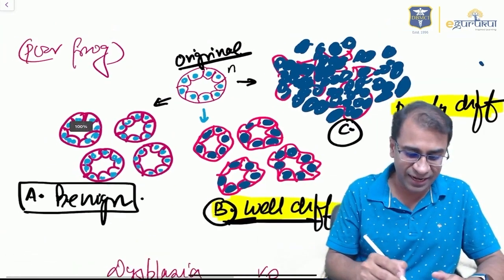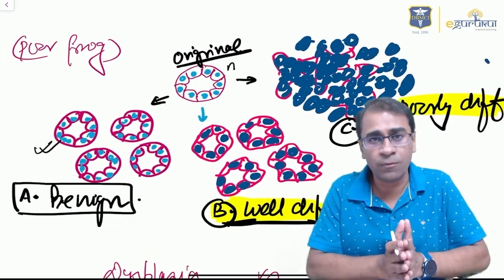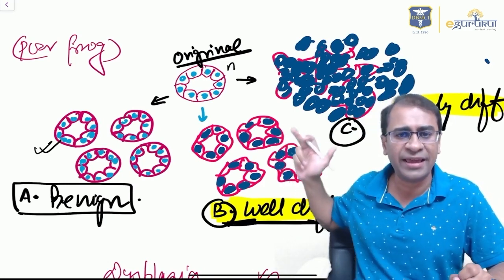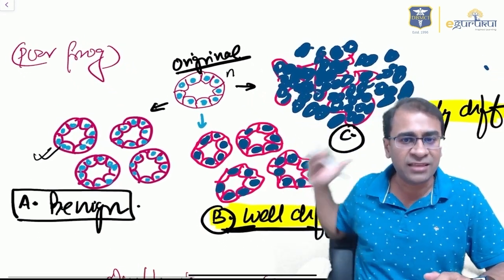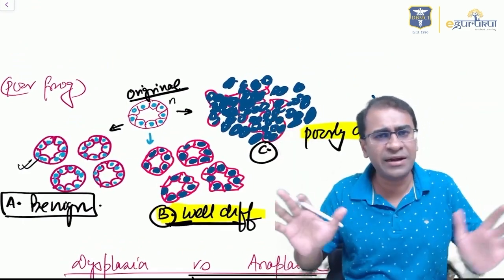If you compare this normal gland to gland number A, this gland is also looking like the normal gland. But if you look at this one, the cells here are hyperchromatic, pleomorphic, high N:C ratio, but the cells or glands here are looking like the original gland. This becomes well-differentiated adenocarcinoma.